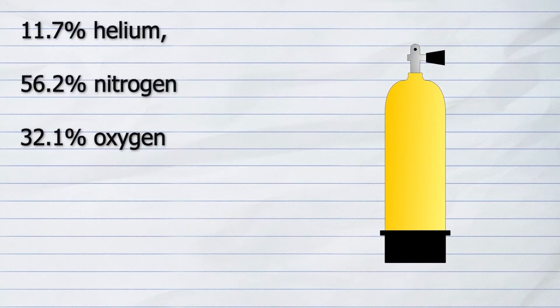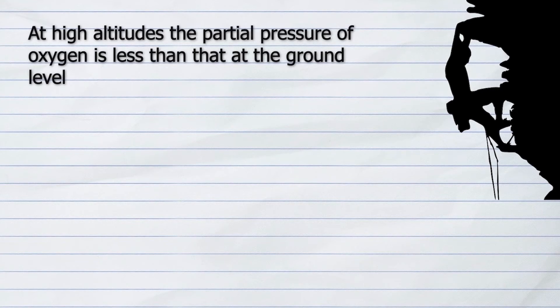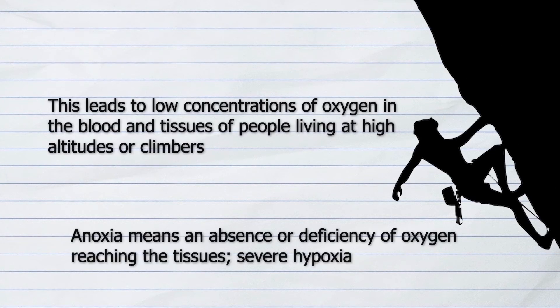Trimix contains approximately 11.7% helium, 56.2% hydrogen/nitrogen, and 32.1% oxygen. At high altitudes, such as for mountain climbers, the situation is different — as altitude increases, the partial pressure of oxygen decreases. This reduced partial pressure means less oxygen reaches the body, leading to hypoxia or severe oxygen deficiency.